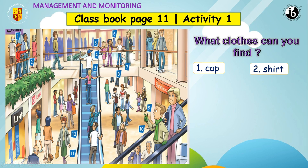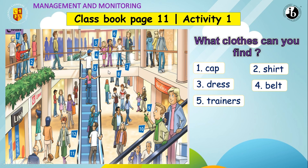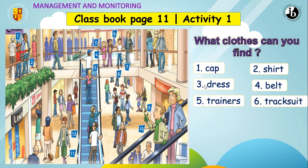Number three — what is she wearing? It's a dress, right. And number four — it's a belt. Number five — what are these? These are trainers. And number six — number six is a tracksuit. You use a tracksuit to exercise, right.